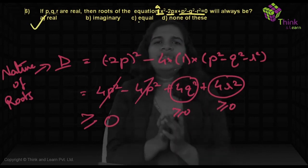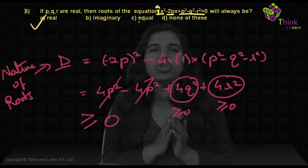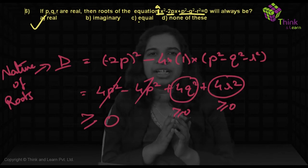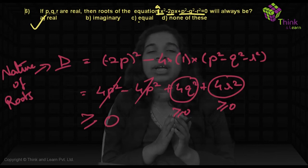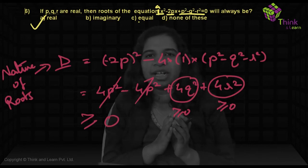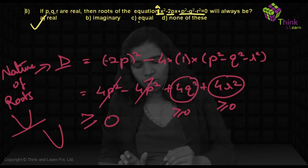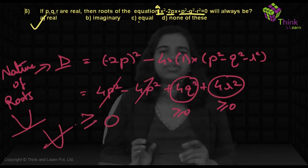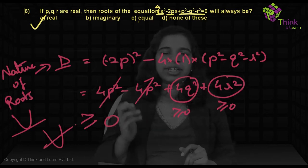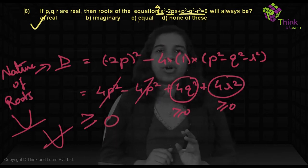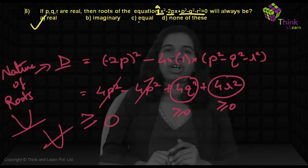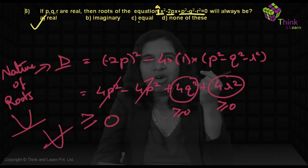Since D = 4Q² + 4R² ≥ 0, the roots are guaranteed to be real. D > 0 means real and distinct; D = 0 means real and equal. We cannot be sure which — that depends on the values of Q and R. So we cannot say the roots are definitely equal, which is why option C (real and equal) cannot be the answer. The correct answer is that roots are real.